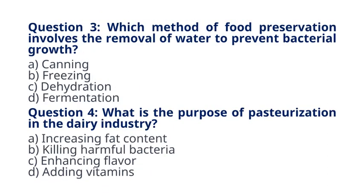Question 3. Which method of food preservation involves the removal of water to prevent bacterial growth? A. Canning B. Freezing C. Dehydration D. Fermentation. The correct answer to question 3 is option C. Dehydration. Explanation: dehydration involves removing water from food, inhibiting the growth of bacteria, and preventing spoilage.